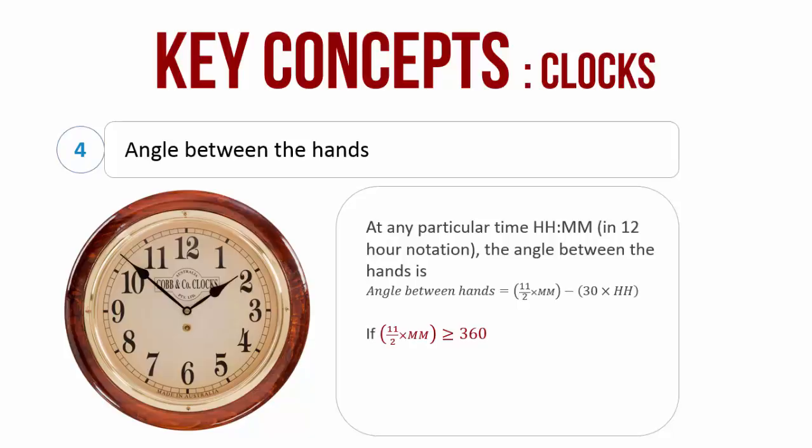One thing that you must note is that if any of the terms in this equation, such as if 11 by 2 into minutes is greater than 360, or if 30 into H is greater than 360, that is if each of them has a value 360 plus some x, then replace each of those by x. That is, say if 11 by 2 into minutes is equal to 370, which is 360 plus 10, replace that with 10.